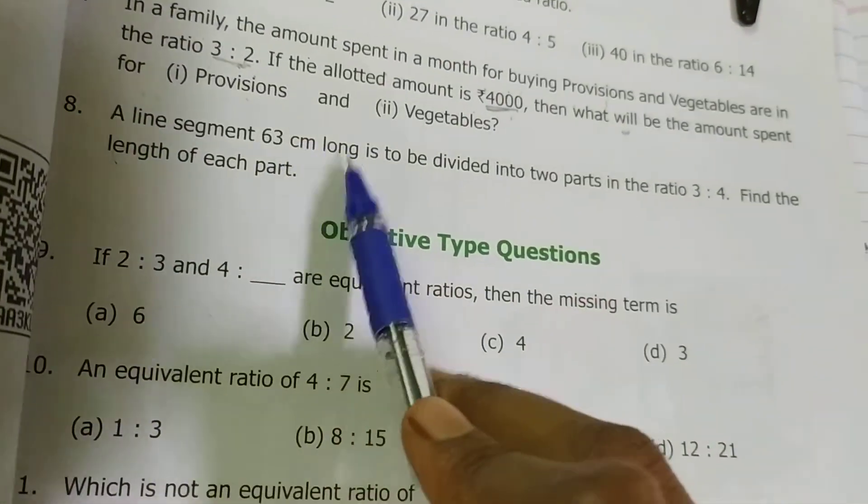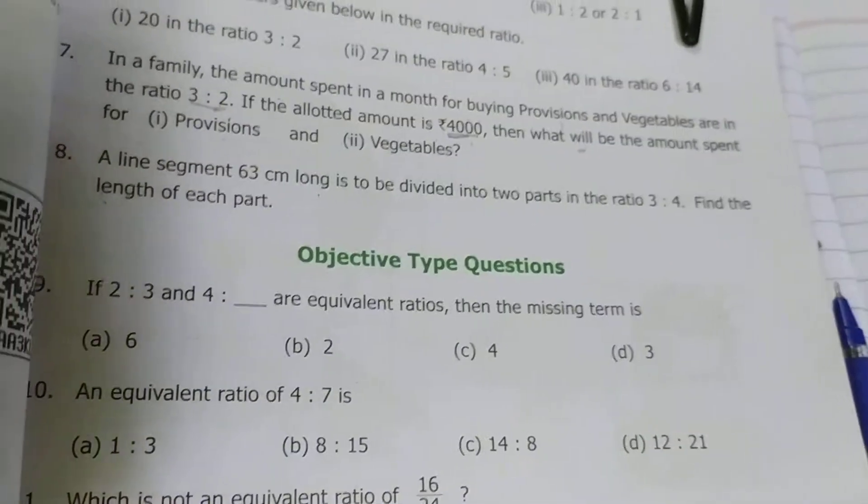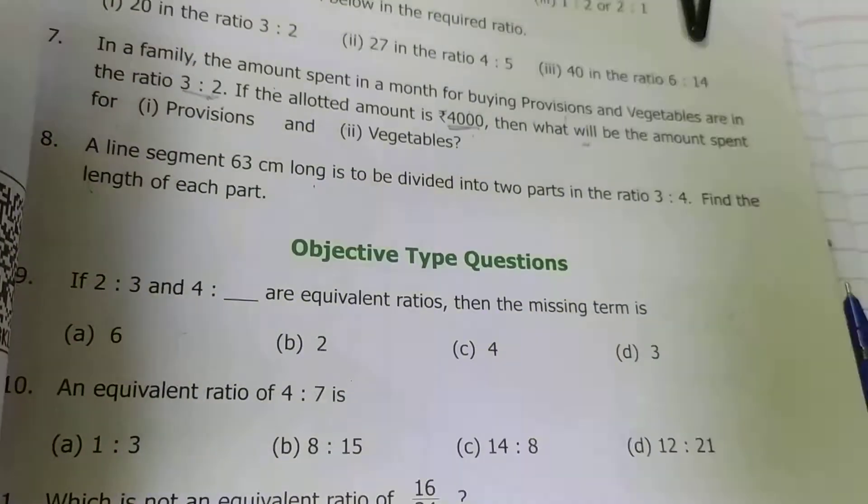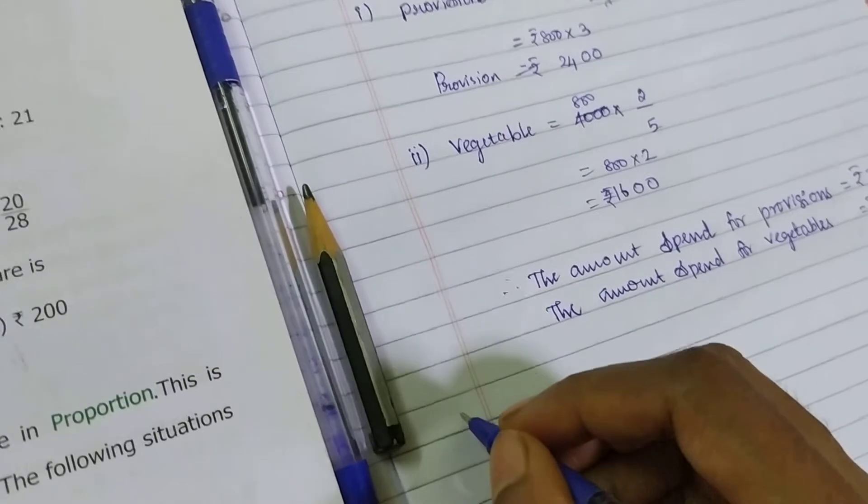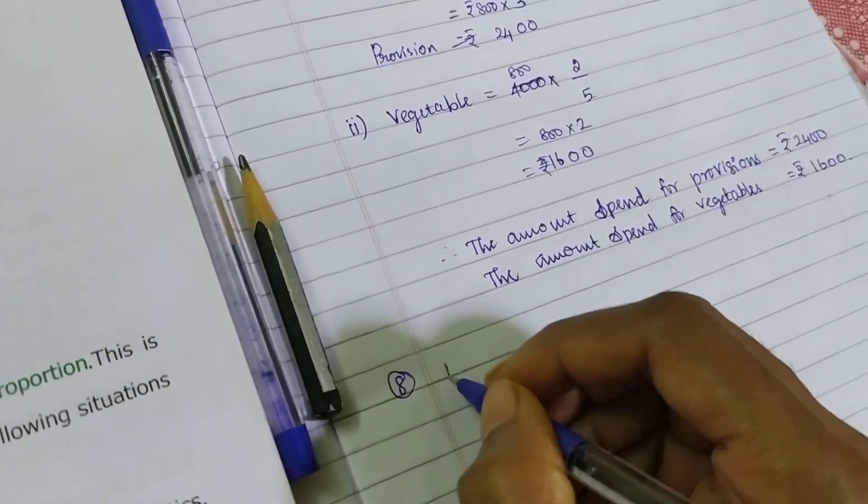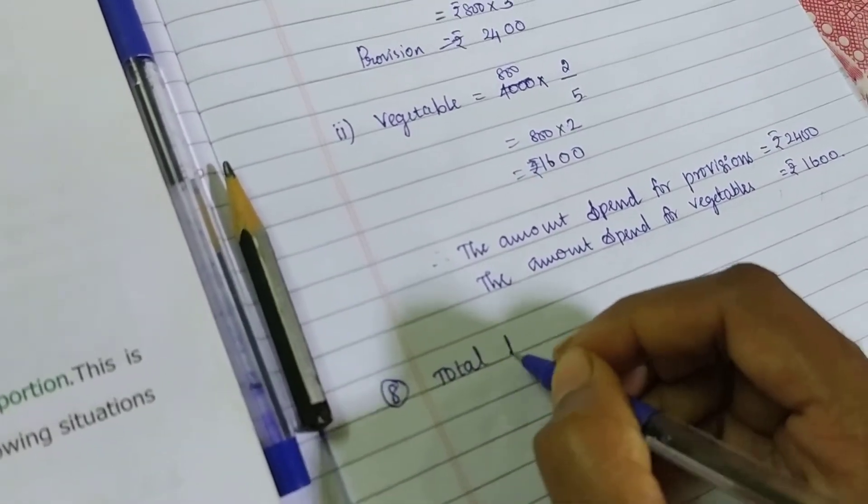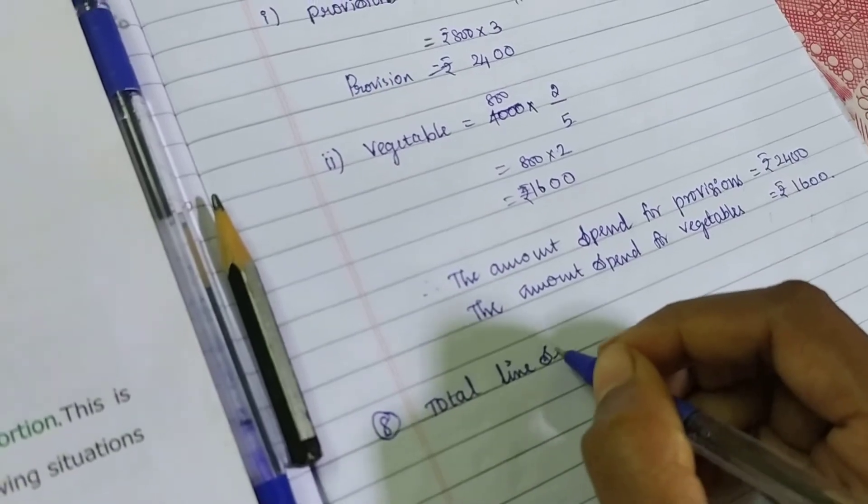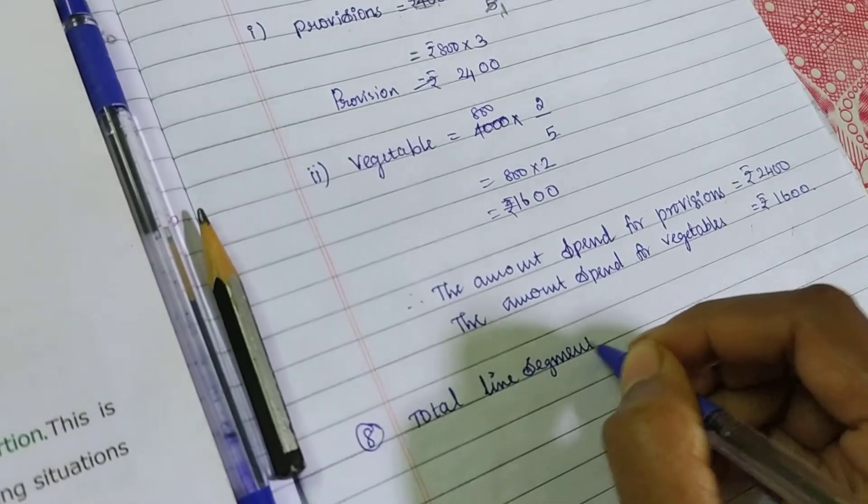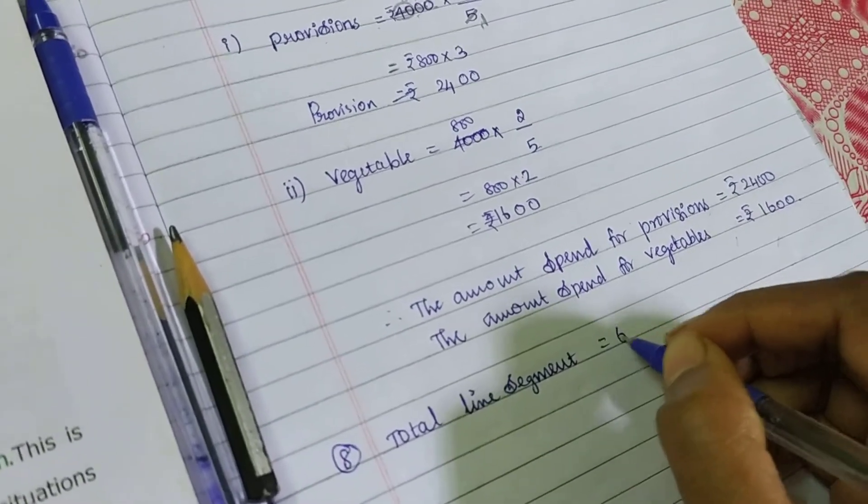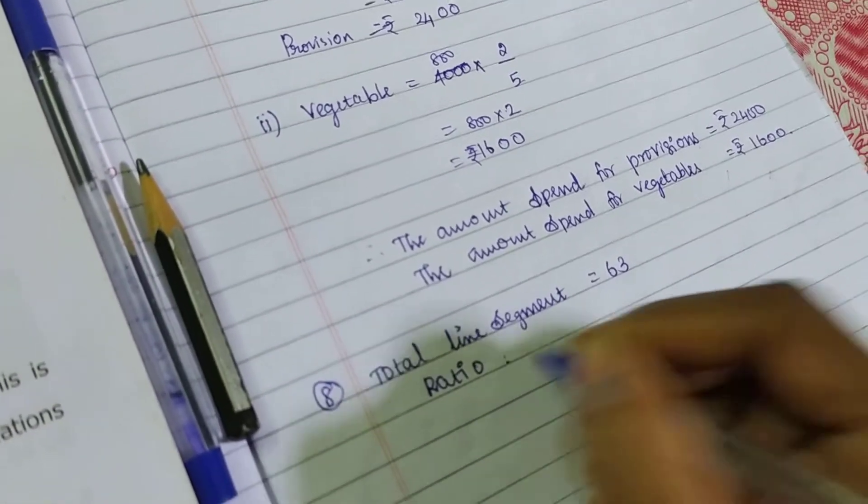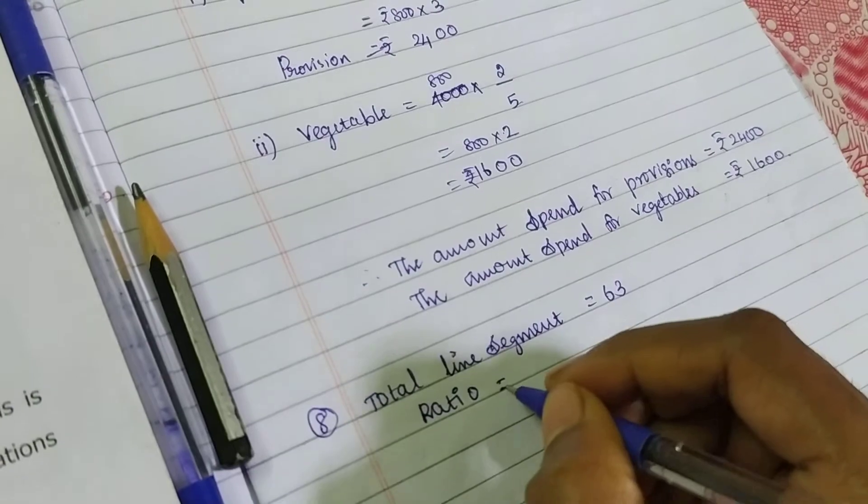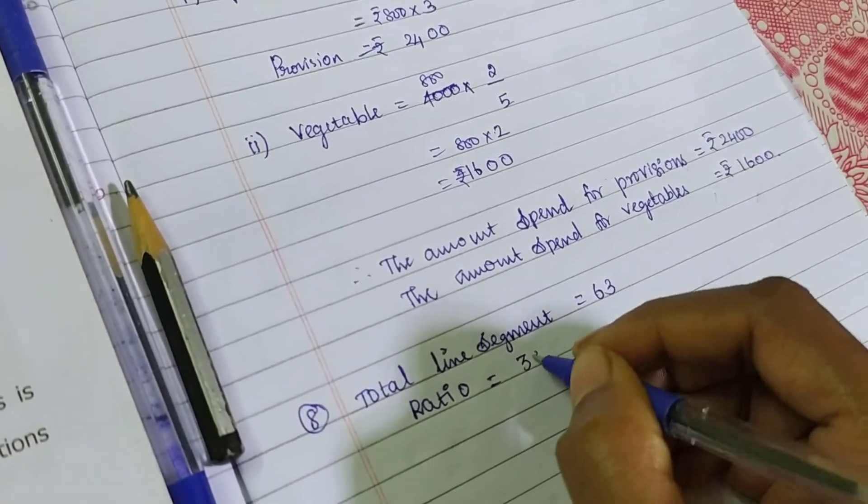Line segment 63 cm long. It is divided into 2 parts in the ratio 3 is to 4. Find the length of each part. The same process. So what they mention: total line segment is equal to 63.